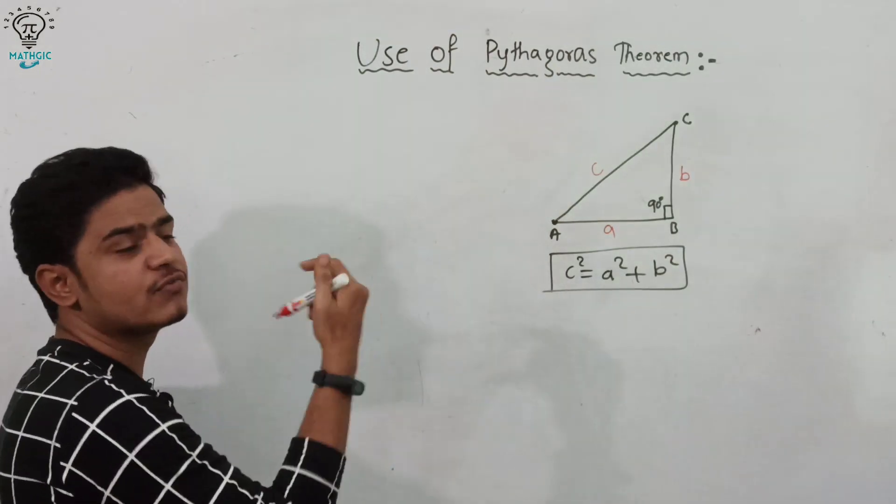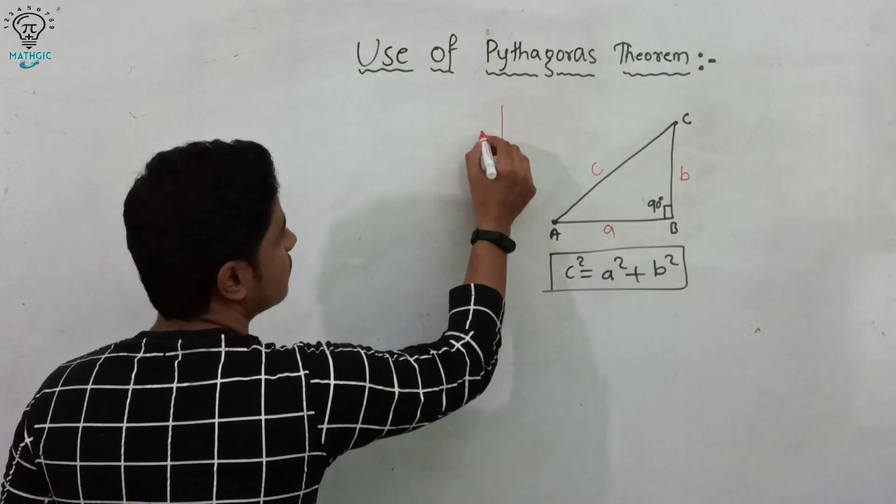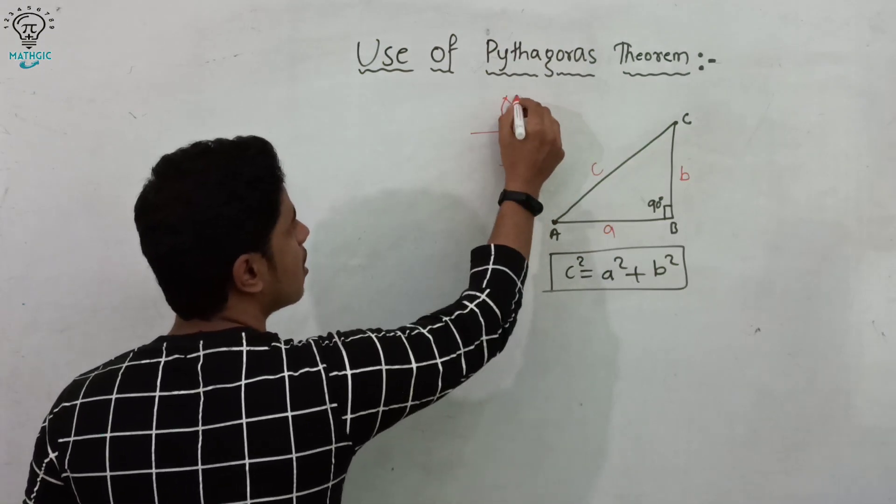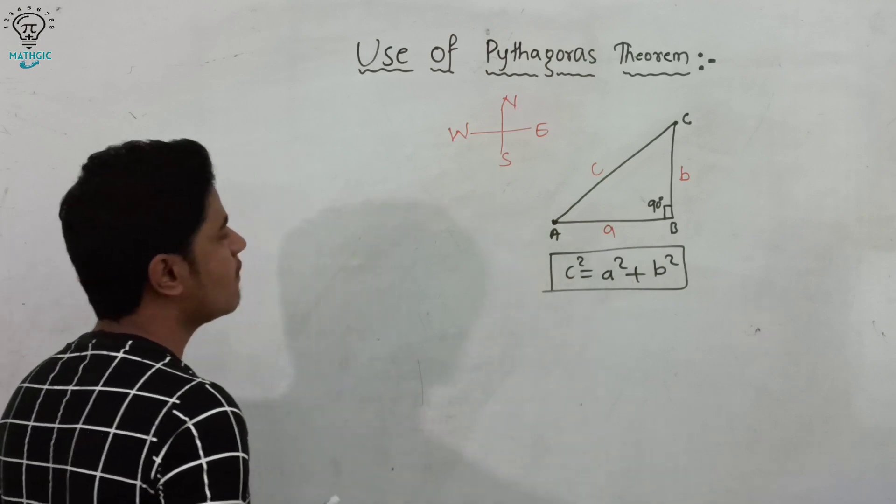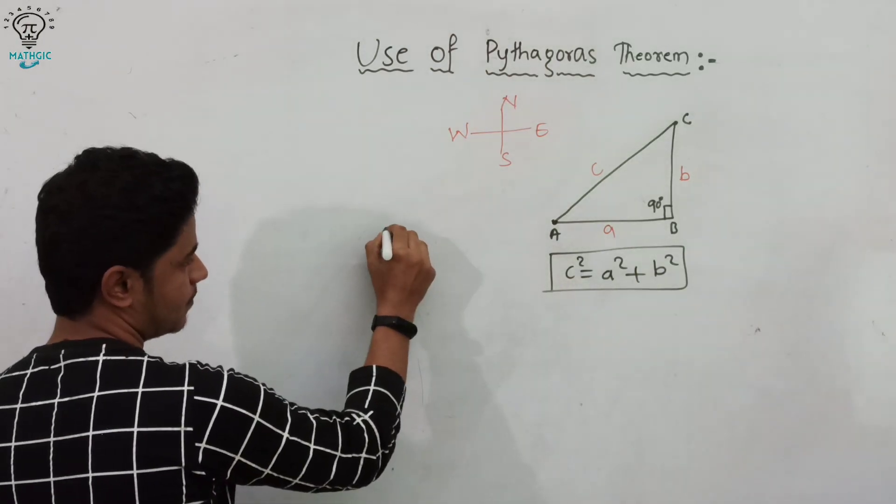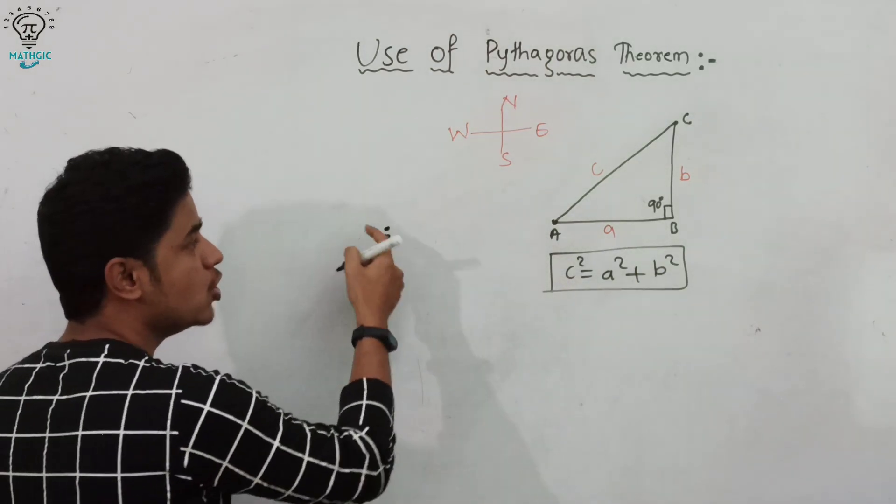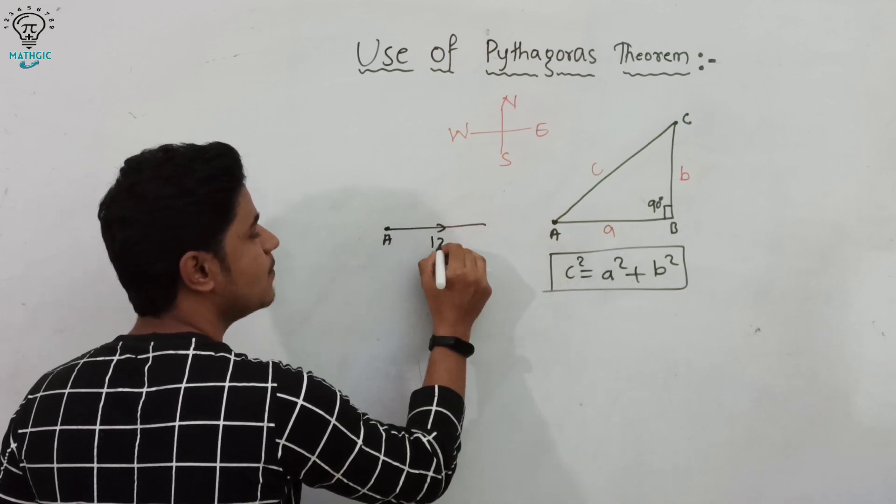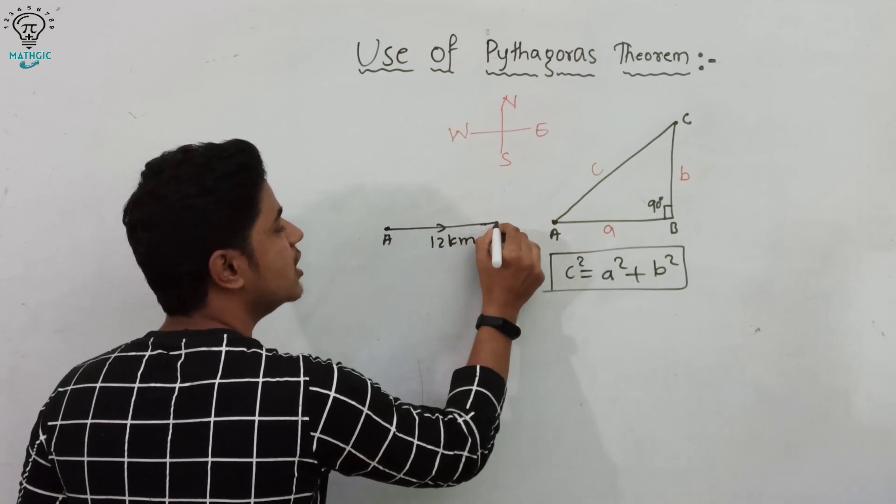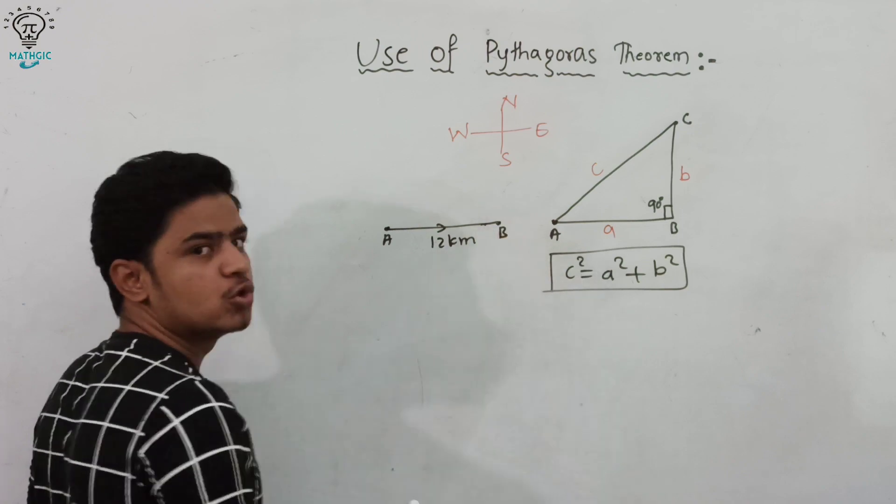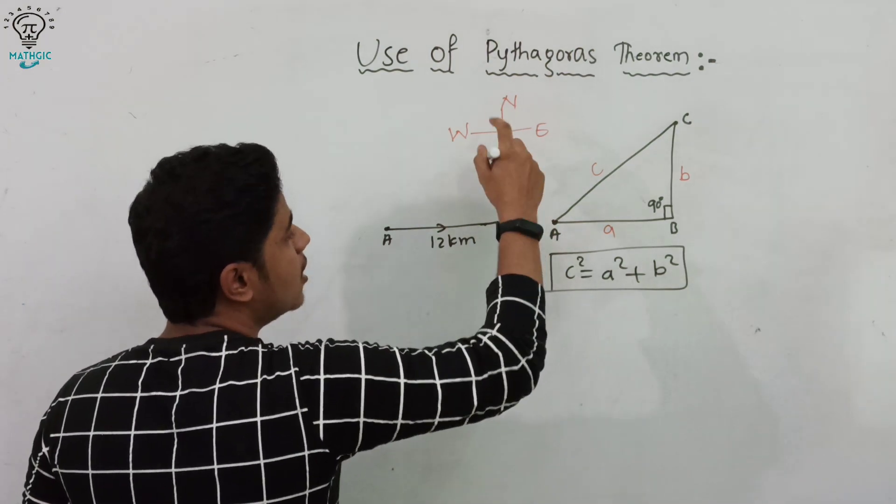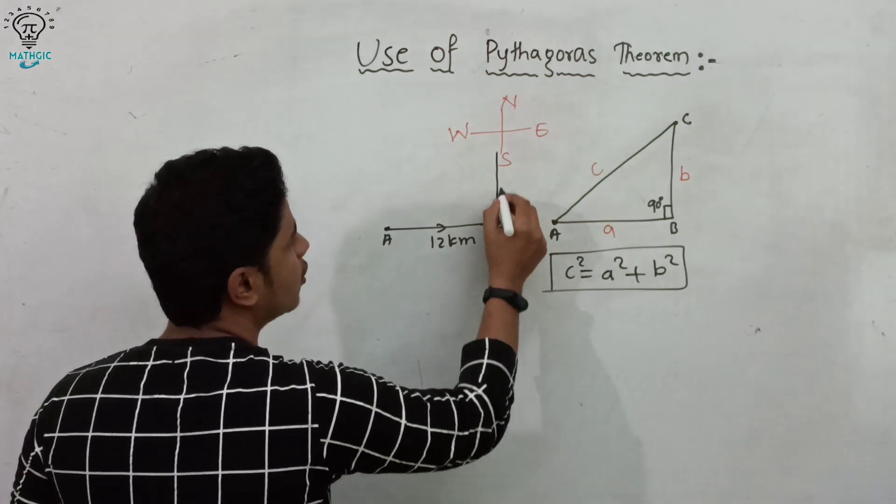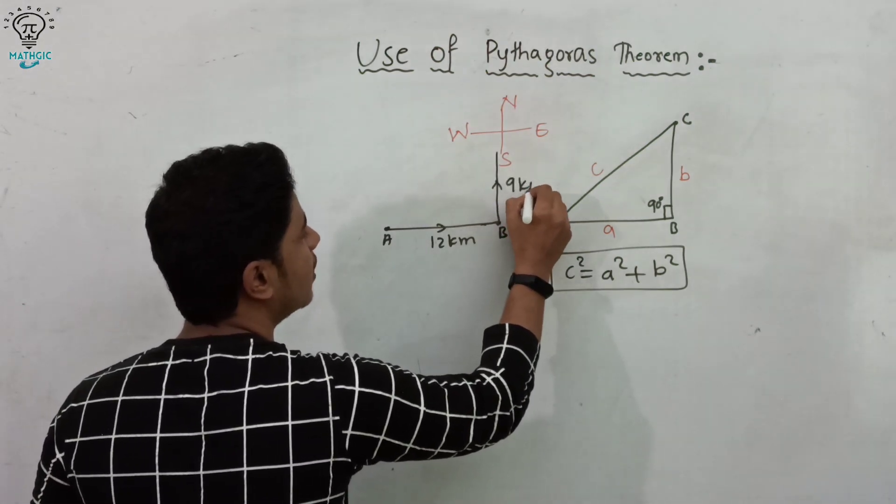Let's have an example. Draw the direction first of south, north, east, and west. A person went from point A towards east 12 kilometers to reach point B, and from point B towards north 9 kilometers to reach point C.